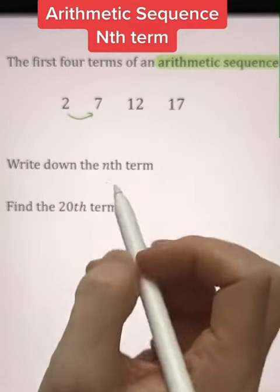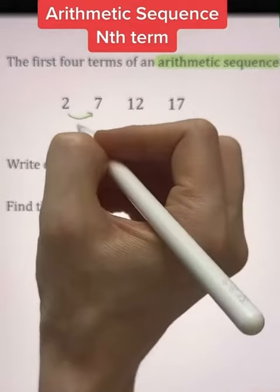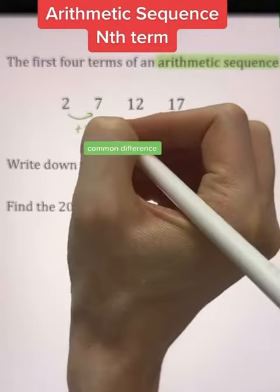Our first step is to work out that common difference, i.e., how do we get from each of our terms? In this case, from 2 to 7,